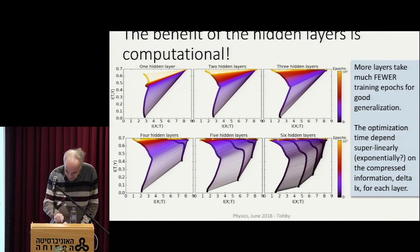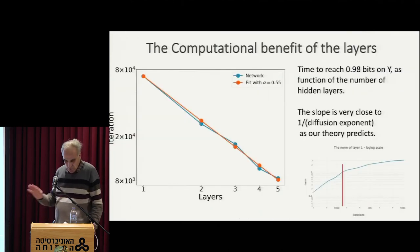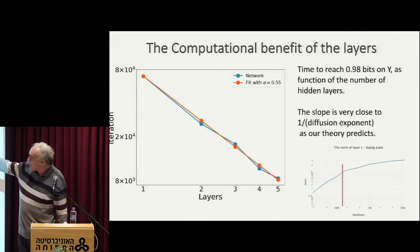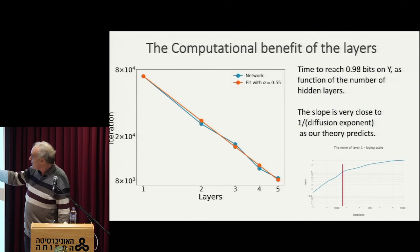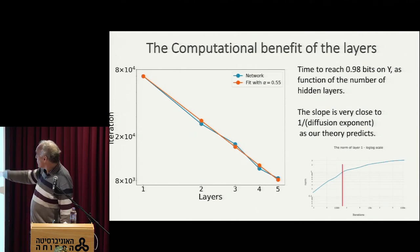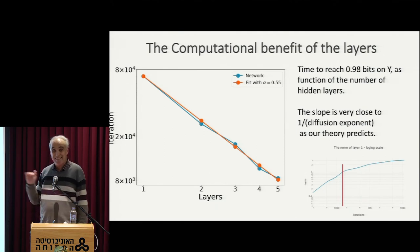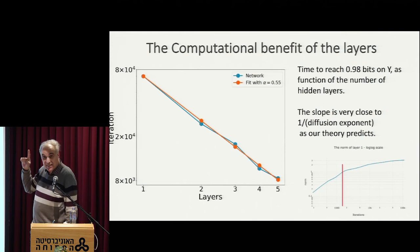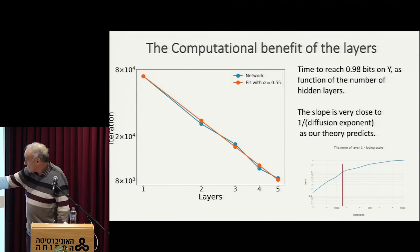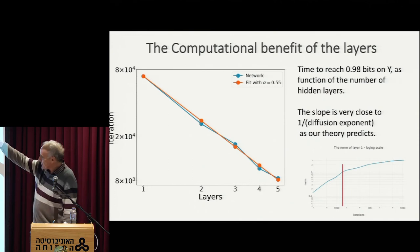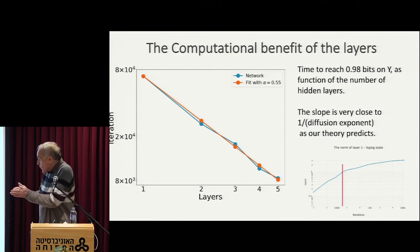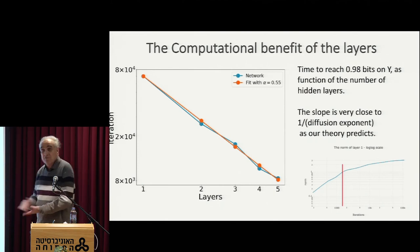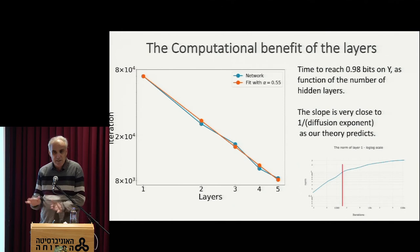So the question: why it happens and how it happens. What you see is the number of iterations — actually number of updates — that it takes to reach a certain point, 0.98 bit in this case, which is very high in generalization, in the last hidden layer, as a function of the number of layers. I predict it's going to be a power law, and I was really amazed to see how nice a power law it is. The question is: okay, this really looks very dramatic. You increase the number of layers and you converge dramatically faster.